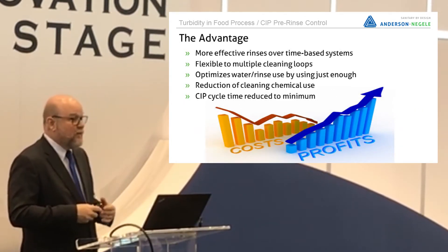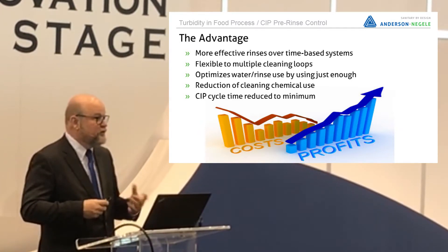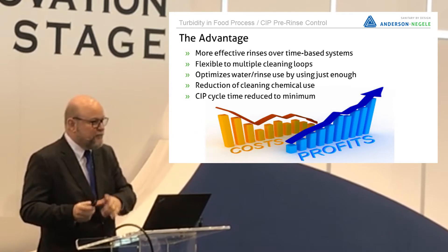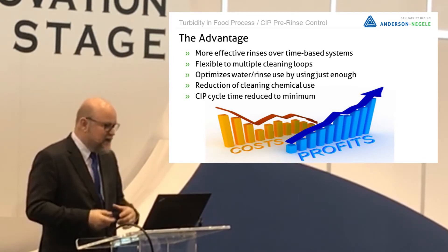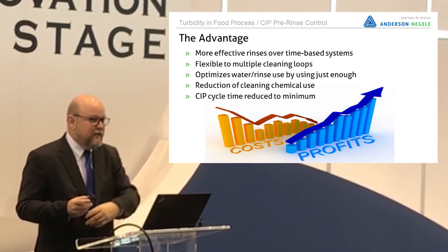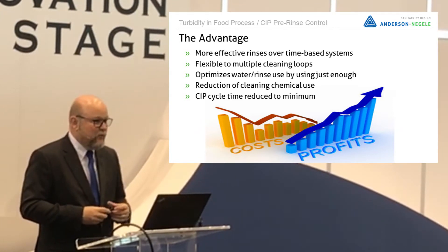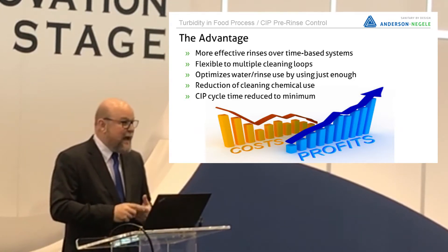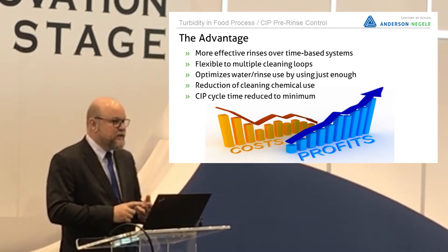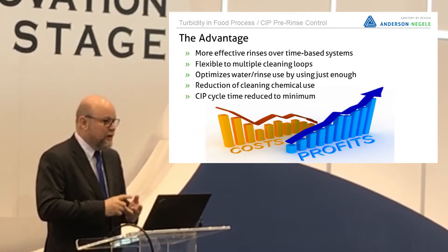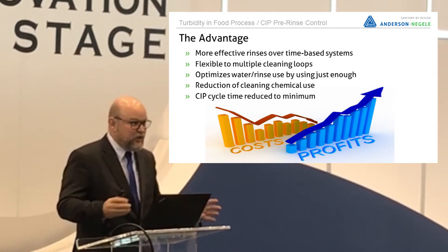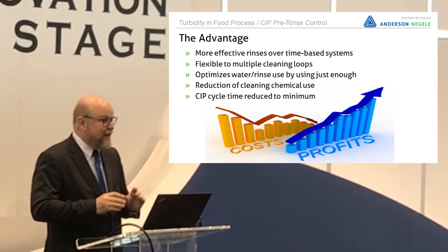The advantage here is we have far more effective rinses than the typical timers used for this system. If you have a system running multiple products, unless you had specific timers for each product, you're already not dealing with them effectively — because clingage rates and thick products don't clean from pipes as quickly as thin products. We can flex the CIP system to any loop with automatic correction based on measuring the returning liquid. So we get an optimization of water use on the rinse by using just enough water — not too much, but not too little. We get a reduction in cleaning chemical use because we are rinsing enough. And our CIP cycle time is reduced to the right length — as short as it should be.